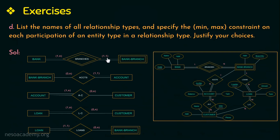For the first relationship type 'branches', the entity types are bank and bank branch. All banks have branches, so total participation, represented as 1, and a bank can have at most n branches, giving min-max (1,n). All bank branches belong to one bank, so total participation represented as 1, and one bank branch can have at most one bank as owner, giving min-max (1,1).